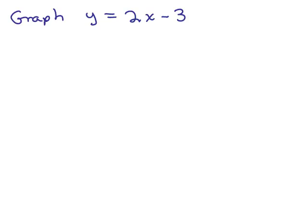Graph y equals 2x minus 3. The first thing we want to do is state m and b. The slope m is 2, and b is negative 3. Since the slope is just a number, it'll be easier to write that as a fraction if we want to use it as the rise over the run. So let's get out some graph paper and try it.